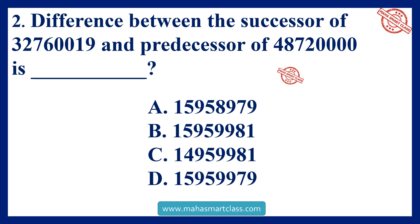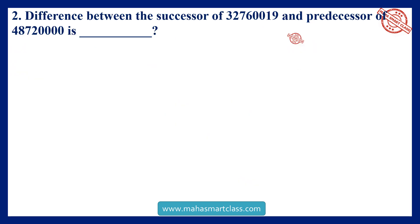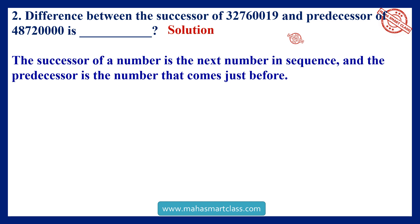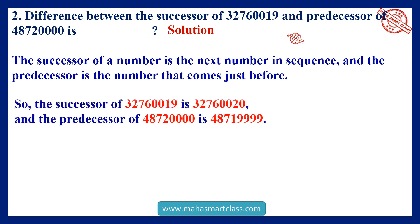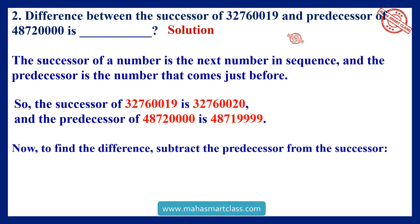Difference between the successor of 3 crore 27,60,019 and predecessor of 4 crore 87,20,000 is? The successor of a number is the next number in sequence and the predecessor is the number that comes just before. So, the successor of 3 crore 27,60,019 is 3 crore 27,60,020 and the predecessor of 4 crore 87,20,000 is 4 crore 87,19,999.